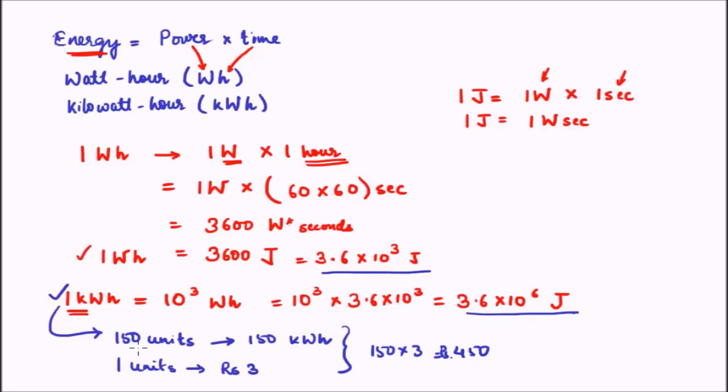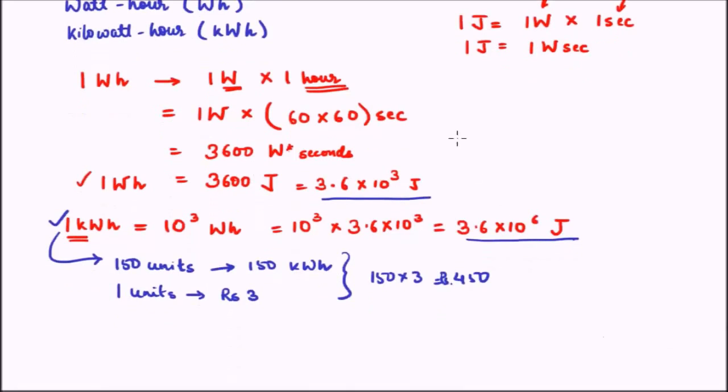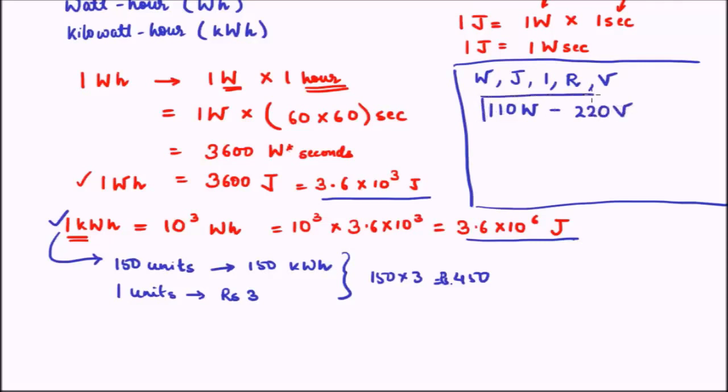Now, let us see something which is known as the power rating of common electrical appliances. We have seen several terms: watt that is power, joule energy, the current flowing, the resistance, the potential difference. There are many varieties of units in which a system can be reported. But how is a system actually reported? A system, let's say you have a geyser, a water geyser or an iron, how is the appliance rated? Normally what you will find is they are rated like this: 110 watt, 220 volt, something like this.